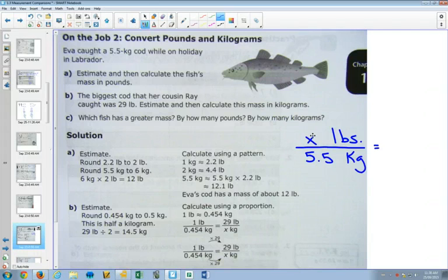We go to our formula sheet. Do you have something that has pounds and kilograms? Yes, 1 kilogram is 2.21 pounds. 2.21 pounds is 1 kilogram. There's two formulas. And it doesn't matter which one you use. They're both going to work.